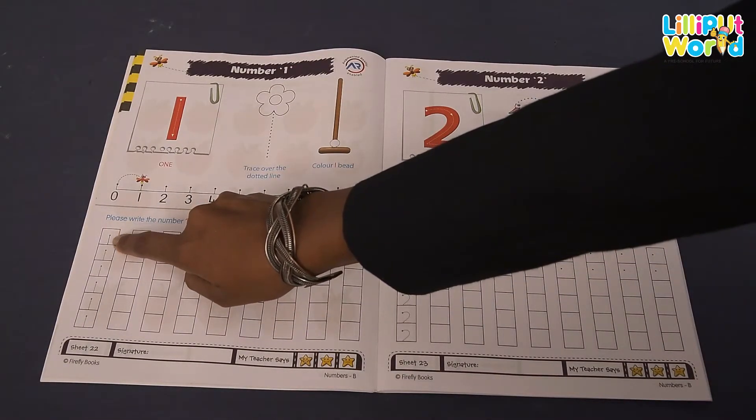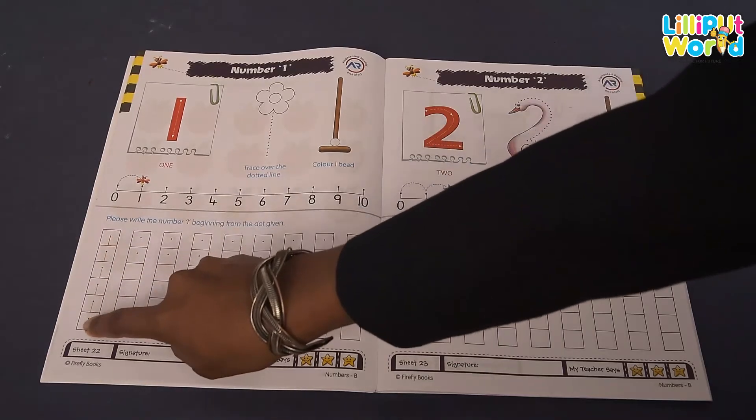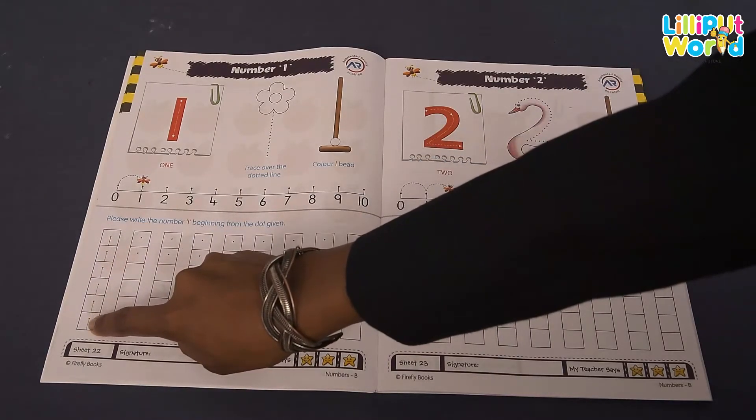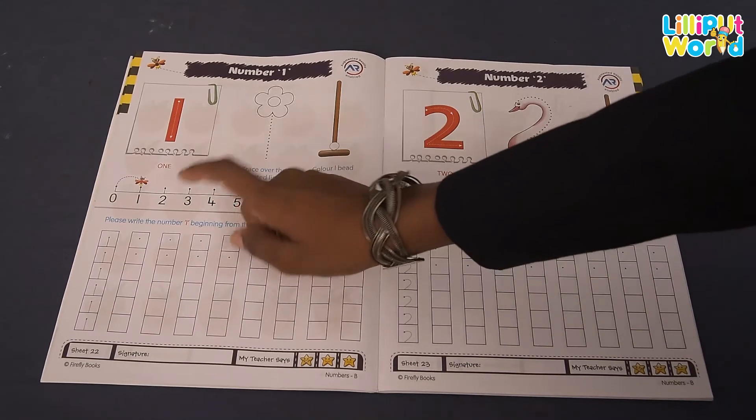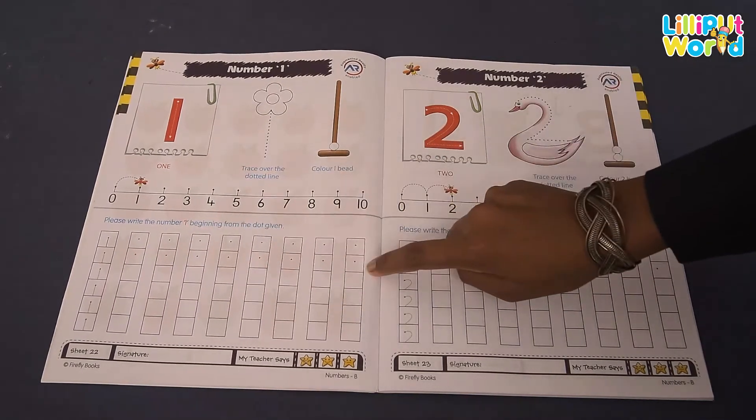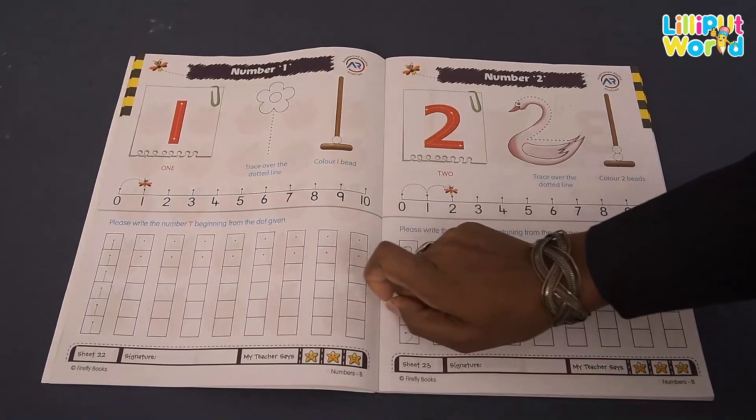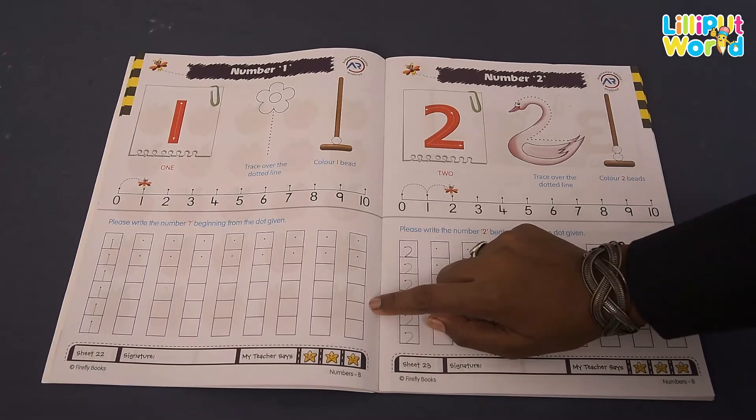Now you have to write the number. Complete this line by tracing the number. Please use a small pencil to write, and complete the rest of the line the same way. Thank you, kids!